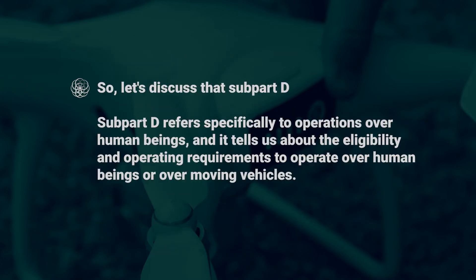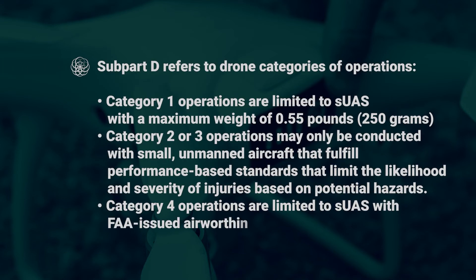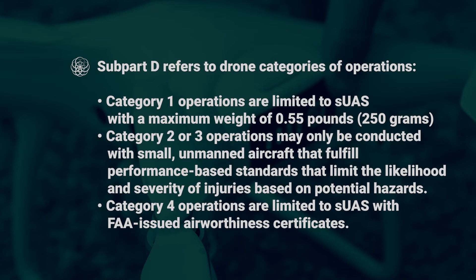So in this section, let's discuss Subpart D. Subpart D refers specifically to operations over human beings, and it tells us about the eligibility and operating requirements to operate over human beings or over moving vehicles. Subpart D refers to drone categories of operations. Category 1 operations are limited to SUAS with a maximum weight of 0.55 pounds or 250 grams. Category 2 or 3 operations may only be conducted with small unmanned aircraft that fulfill performance-based standards that limit the likelihood and severity of injuries based on potential hazards. Category 4 operations are limited to SUAS with FAA-issued airworthiness certificates.